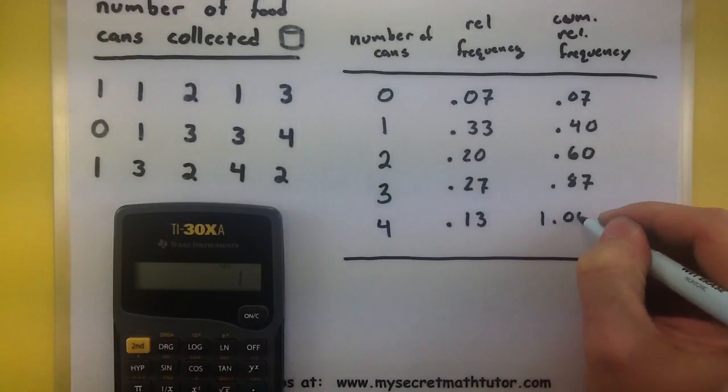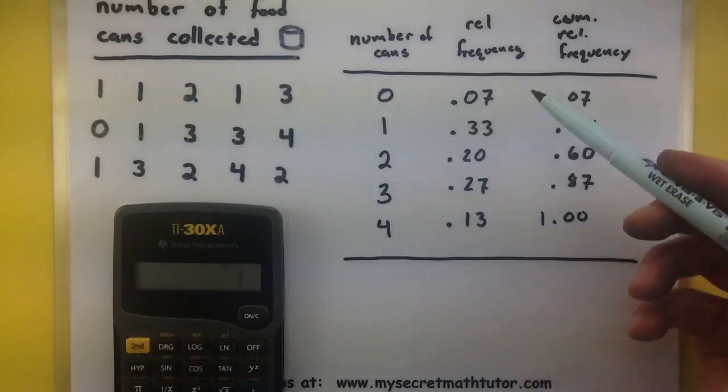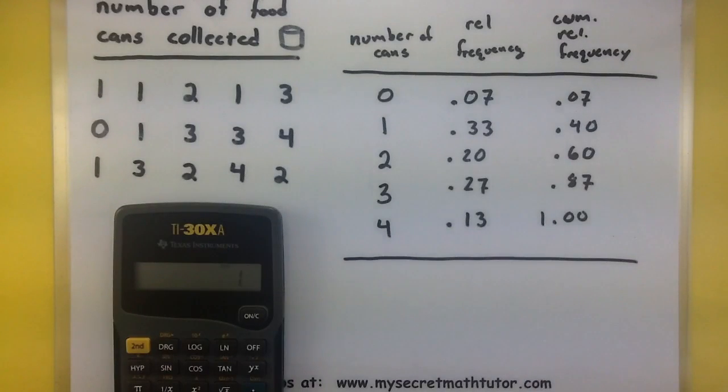Adding up everything before, it looks like we get 1. And if you do this process correctly, this last value should always equal 1, because the total relative frequency should equal 1.